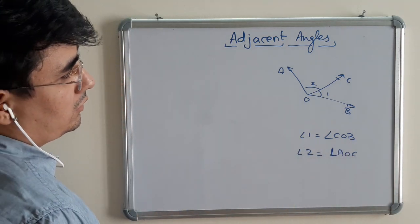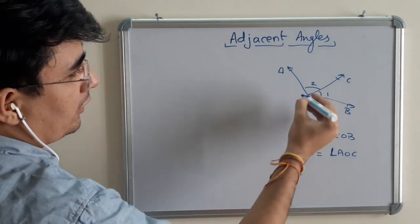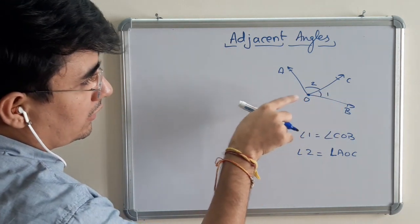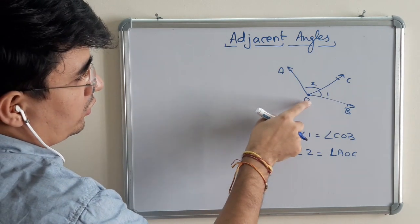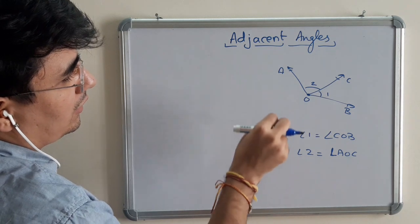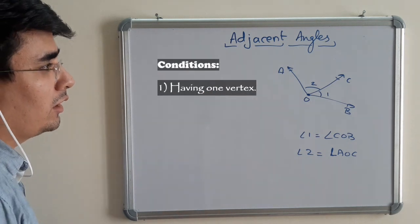In both cases, there are some features, some points. One point is they have a common vertex. They are originating from the same point, point O. Both angles are meeting at one single point. That's why this is the first criteria of being adjacent angles.